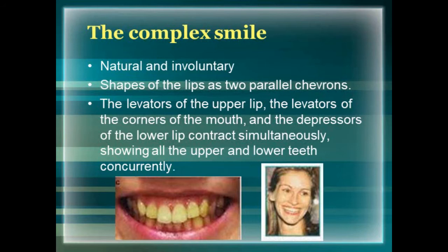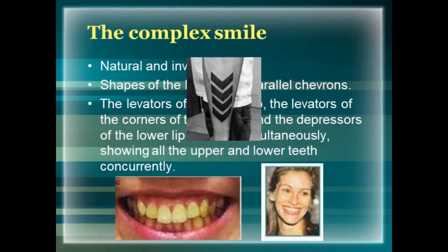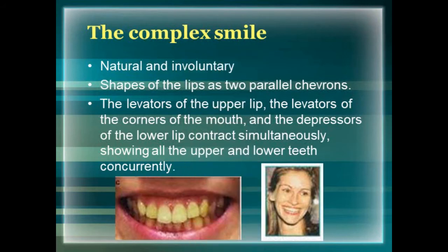In the complex smile, the shape of the lip is compared to two parallel chevrons — V-shaped designs. Here, the levators of the upper lip, the levators of the corner of the mouth, as well as the depressors of the lower lip all contract simultaneously, thereby showing all the upper and lower teeth concurrently. It is named the complex smile because almost all the muscles are contracting, showing both upper and lower teeth.